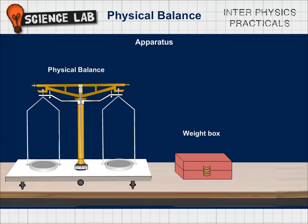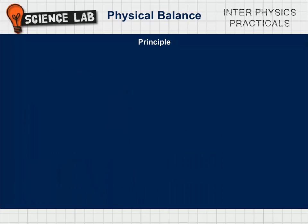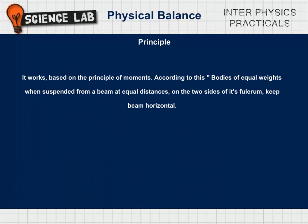Apparatus: Physical balance, weight box. Principle: It works based on the principle of moments. According to this, bodies of equal weights when suspended from a beam at equal distances on the two sides of its fulcrum, keep beam horizontal.